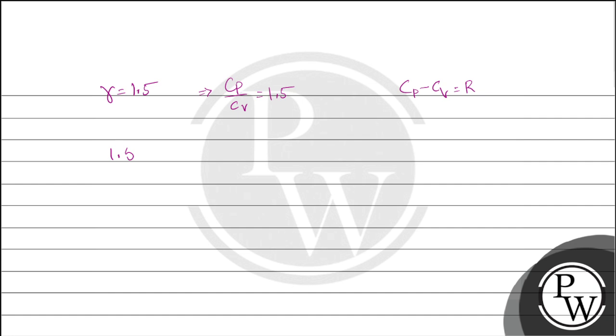So, if we look at Cp equals to 1.5 Cv, that is 1.5 Cv minus Cv equals to R. That is 0.5 Cv equals to R, so Cv equals to 2R. Then we will get Cp equals to 3 by 2 into Cv, or 1.5 Cv equals to 3R.